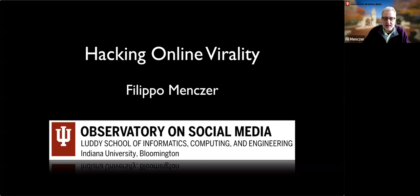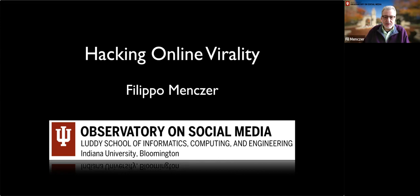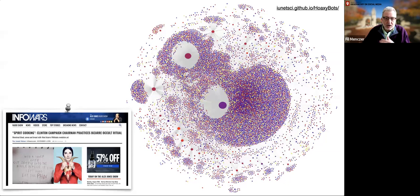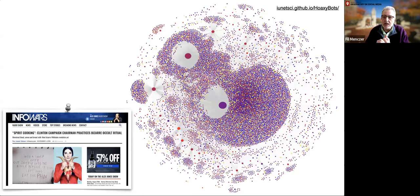Thank you so much. Thank you guys for having me. It's an honor. I'm going to talk about the different ways in which the mechanisms of online virality are being manipulated. Let me start with this picture to present a typical object that we study here. We look at diffusion networks. The nodes represent Twitter accounts, and the edges represent ways in which a piece of information goes from one person to another, in this case through retweets.